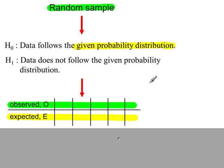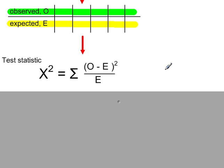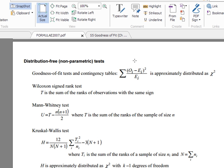Our data goes into a table where we have our observed values — the O values — and these must be frequencies. Then, using the probability distribution, we calculate the E values. Again, these are frequencies, which must be at least 5. We then calculate our test statistic, x squared. This formula is on page 14 in the AQA formula book. We've also used this formula in unit S3 with contingency tables.